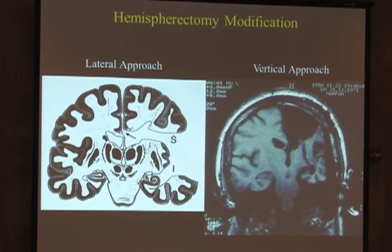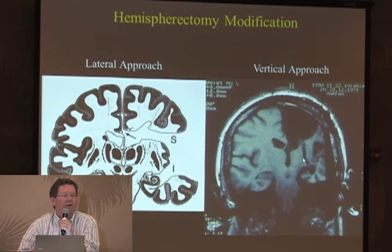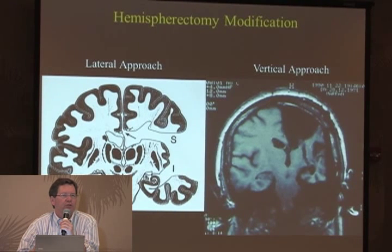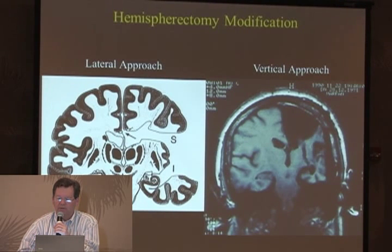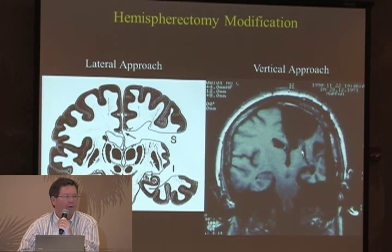Then in the 1990s, Olivier de Leland from Paris devised what he called a vertical hemispherectomy. He had learned primarily by doing callosotomies, which illustrates the theme that surgeons tend to adopt the technique they've trained in most. His approach involves taking out a window in the frontal area and going through the deeper structures to disconnect, leaving a fair amount behind but achieving more complete disconnection.